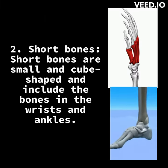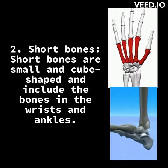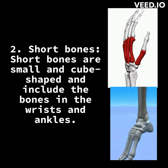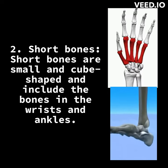2. Short bones. Short bones are small and cube-shaped and include the bones in the wrists and ankles.